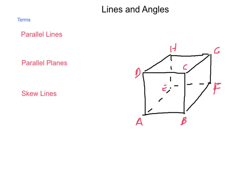First is parallel lines. Parallel lines are coplanar lines that do not intersect. Take two lines that are in the same plane, such as line CD and line HG — they do not intersect, they are parallel. Also CD and AB, or even CD and EF with the cross-cut plane that would go through the middle of this prism.